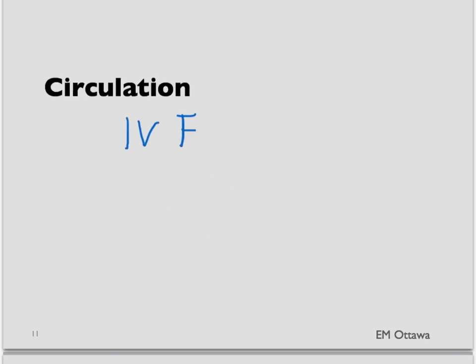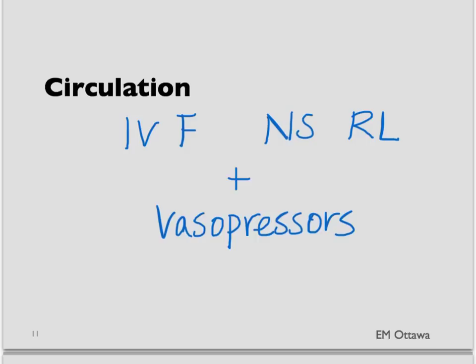For circulation, we give intravenous fluids — often crystalloids such as normal saline or Ringer's lactate. If fluids still do not increase tissue perfusion, we might add vasopressors. There are specific vasopressors suitable for specific types of shock, which we will discuss in parts 2 and 3.